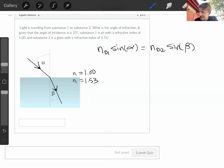And we can plug everything in. We've got 1.00 for index of refraction in material one, 1.53 for material two. We know our incidence angle is 25 degrees, and we don't know our angle beta.